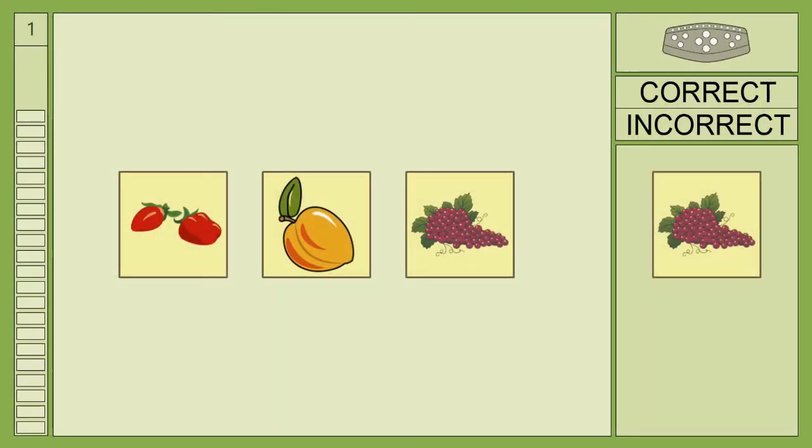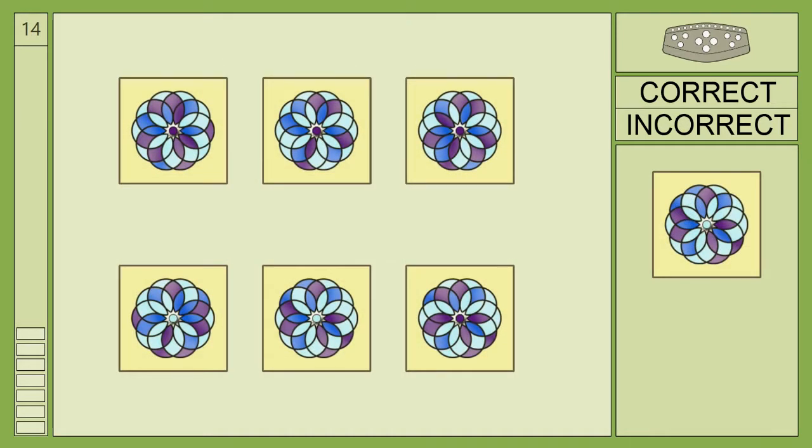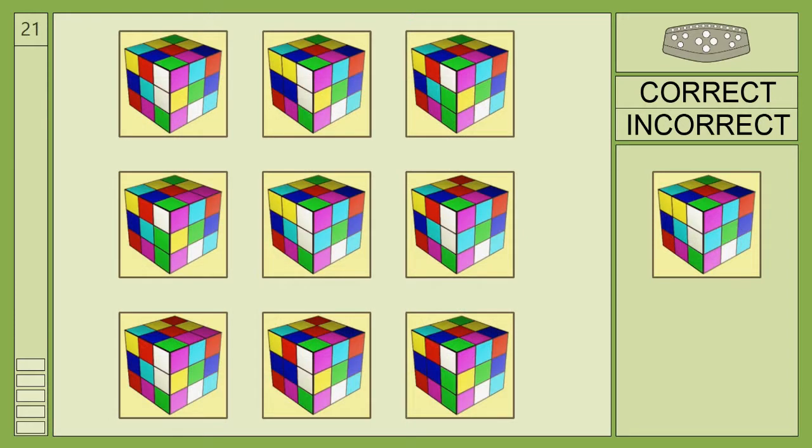With rising difficulty, there will be a greater number of objects with increasing complexity. Rehacom works auto-adaptively—the difficulty level will rise or fall depending on the patient's performance. The performance bar illustrates the development, and with each change in level, the user will receive additional feedback.